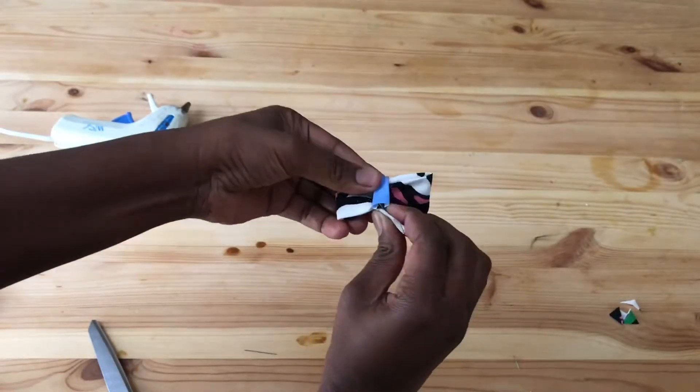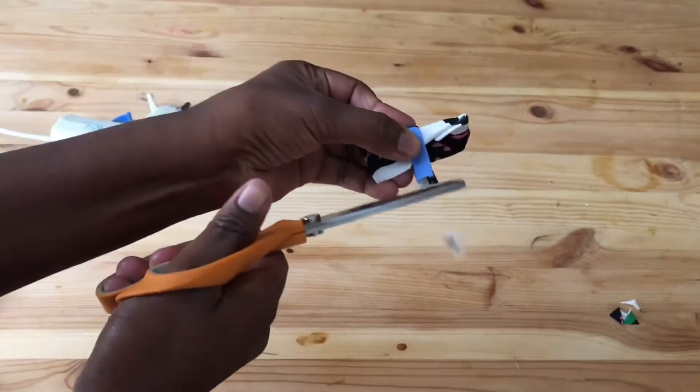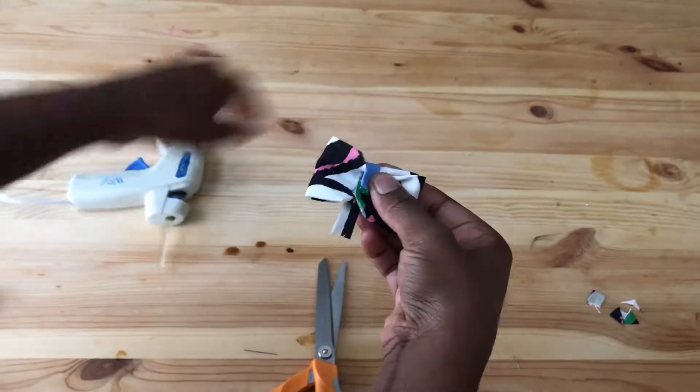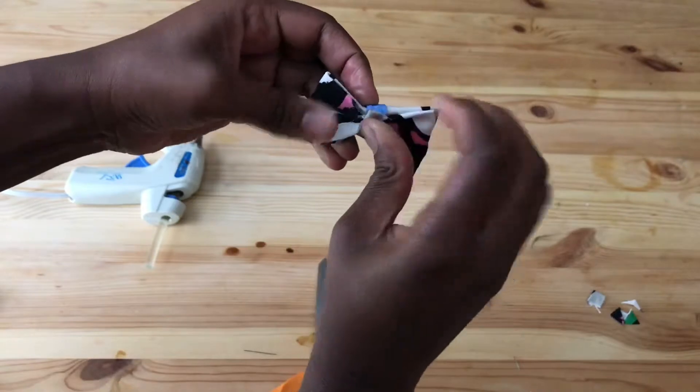We take our scissors and we clip what is excess and hot glue the small piece around the larger so that it looks like a bow.